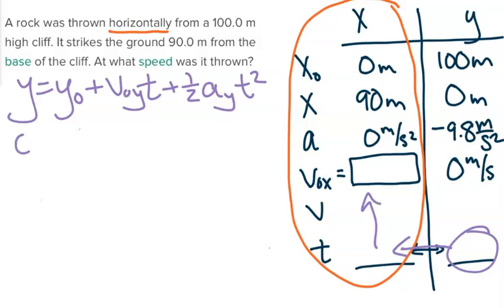So our final y position is 0. Our initial y position is 100 meters. We know that our initial y velocity is 0, so we can get rid of that term entirely. And then we have one-half of negative 9.8, so we're going to go ahead and change that to negative 4.9 and multiply that by t squared.